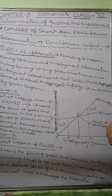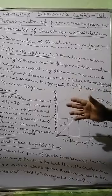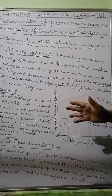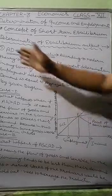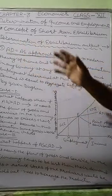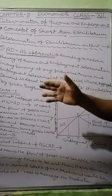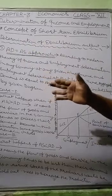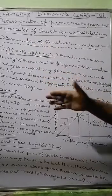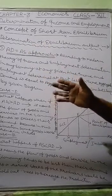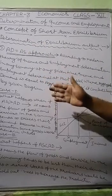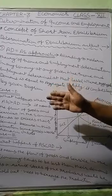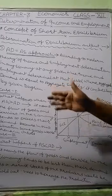In general words, we can say that when there is an equilibrium between aggregate demand and aggregate supply, it means there is a total absence of inflation and deflation, and that situation is defined as an ideal situation.